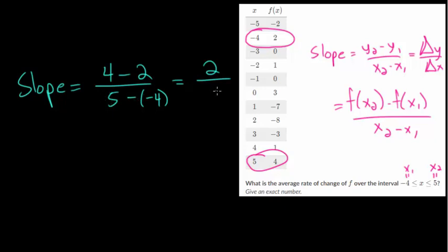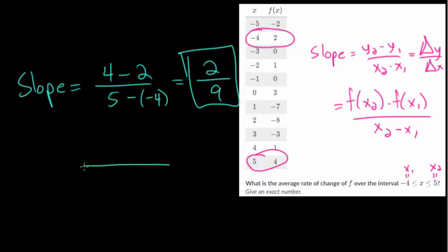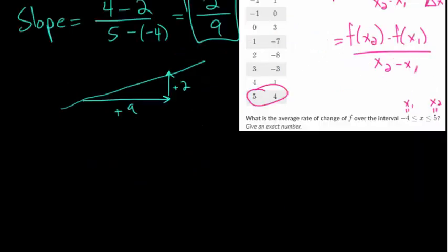So 2/9 would be the average rate of change over this interval. Remember, you want to be able to interpret that — it essentially means every time you go over 9 units, you go up 2 units, so it's roughly upward sloping.